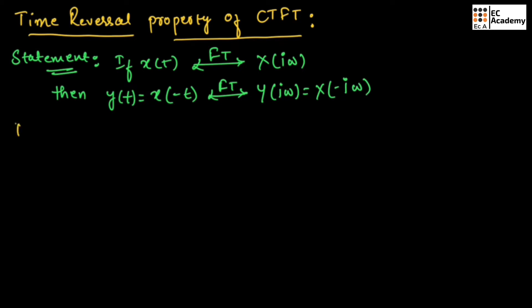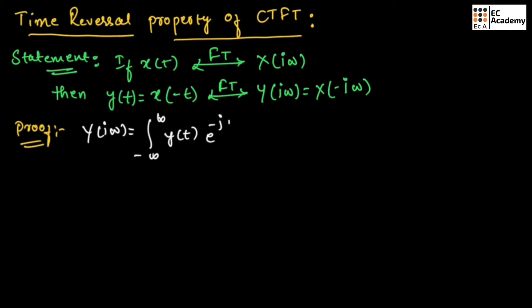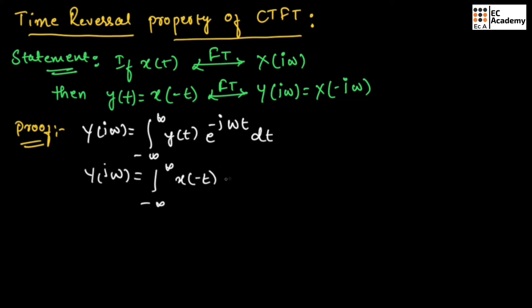Now let us prove this. Let us take Y(jω), which is equal to the integration from minus infinity to infinity of Y(t) exponential to the power of minus jωt dt. This is the standard formula for continuous time Fourier transform. Now in place of Y(t), let us replace X(-t). So if we replace X(-t), we will obtain Y(jω) equal to the integration from minus infinity to infinity of X(-t) exponential to the power of minus jωt dt.